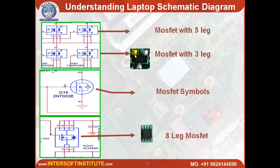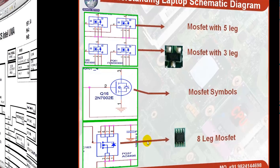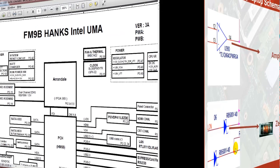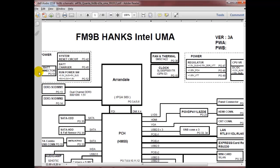The MOSFET symbols will be like this — this is a five-leg MOSFET, this is a three-leg MOSFET, this is a four-leg MOSFET. This new MOSFET is a three-leg type. This is a four- or eight-leg MOSFET in schematic form.